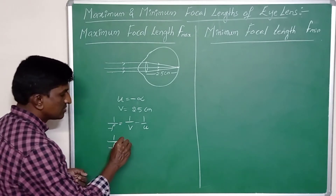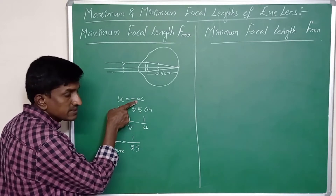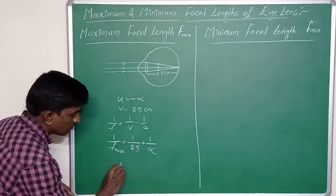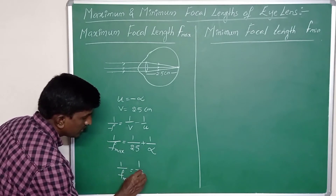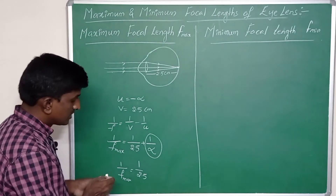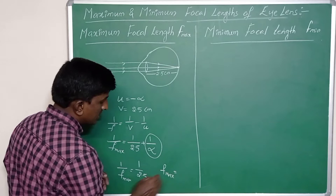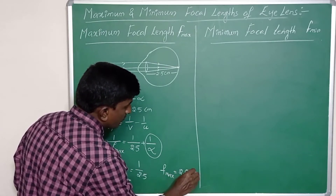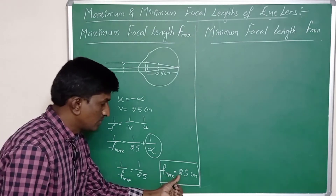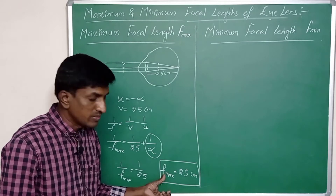Here we are calculating the maximum focal length. So 1 by f maximum equals 1 by v, which is 1 by 2.5 centimeters, minus 1 by u, which is 1 by minus infinity — that equals zero. So 1 by f maximum equals 1 by 2.5, therefore the maximum focal length of the eye lens is 2.5 centimeters. This is the maximum focal length the eye lens can attain.